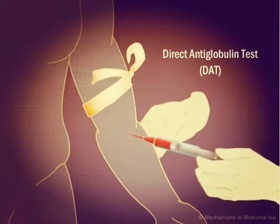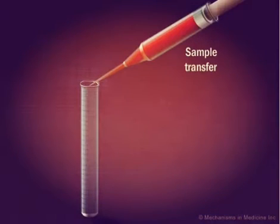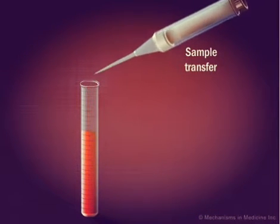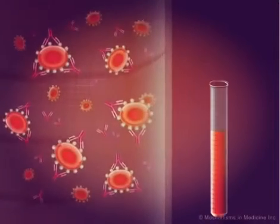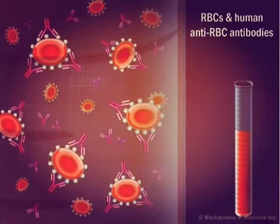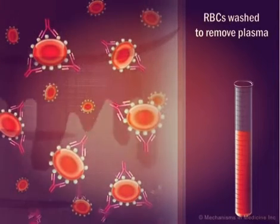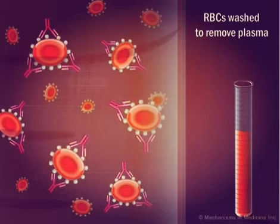A blood sample must be drawn. The patient's red blood cells may have antibodies and other complement system factors on the surface of some of the red blood cells, abbreviated as RBCs in this animation. The blood sample is washed to remove the patient's plasma while leaving the red blood cells intact with their attached antibodies.